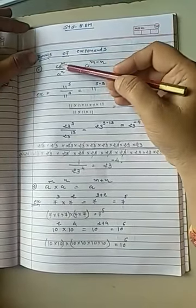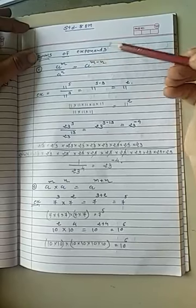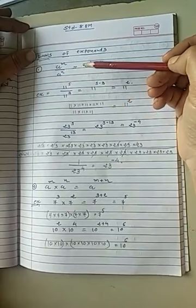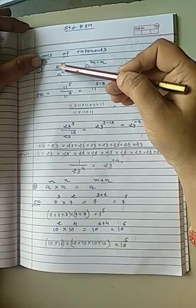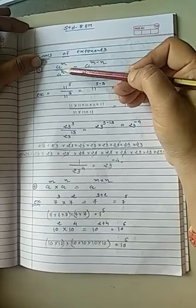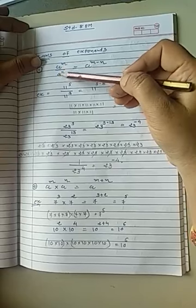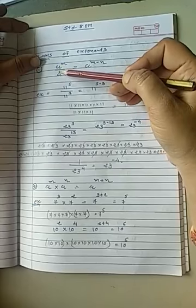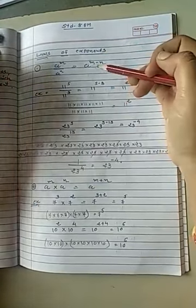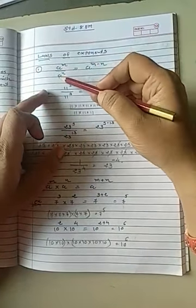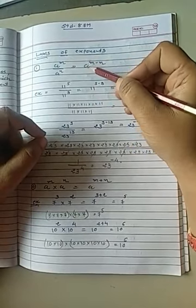The first rule: a raise to m upon a raise to n is equal to a raise to m minus n. You have to remember this rule. A is base and m is power. So here the power of a is m and here the power of a is n. In two ways base is same. Base is common. If you notice, base is equal but the power is different.